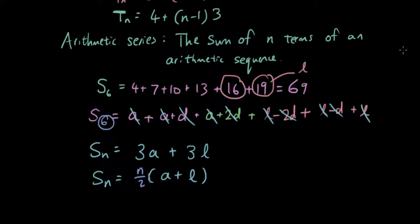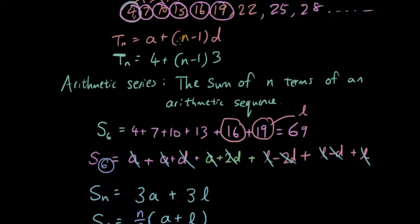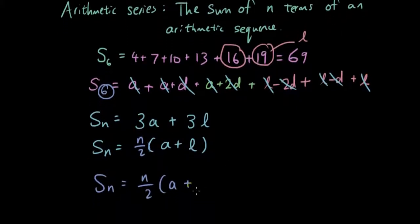With one last little modification and that is l is a bit hard to predict. So we are going to modify it and change l to the formula that we use to find out the last term in the arithmetic sequence which is that one. So I am going to substitute that formula over here where l is. So we can figure out the last term in the sequence. So it is going to be a plus n minus 1d.